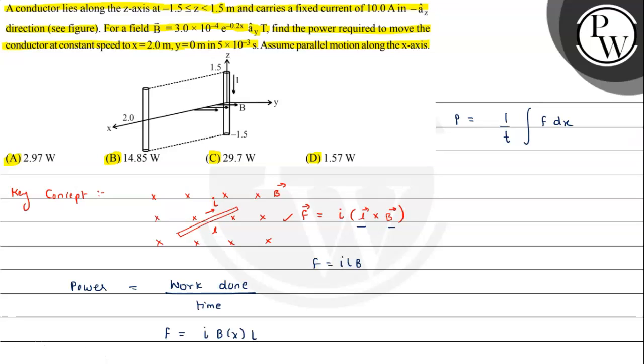So here we can see it will move from zero to two along x. So one upon t, zero to two, and at F's place we will substitute I times L times B. The value of I is 10, length is given as 3 meters (1.5 + 1.5), B's value is 3×10^-4 e^(-0.2x) dx.